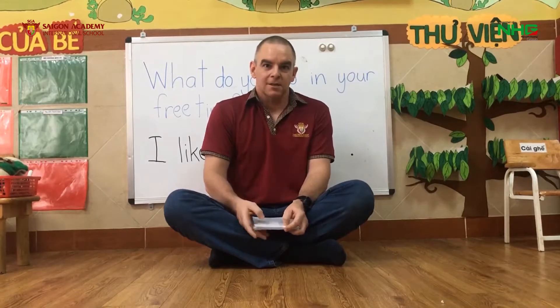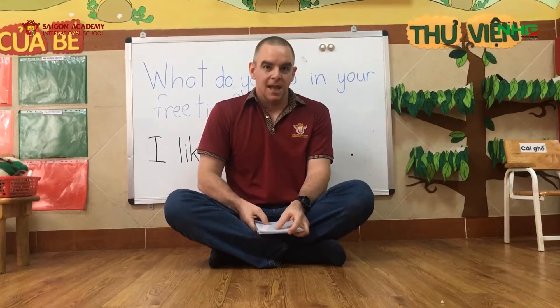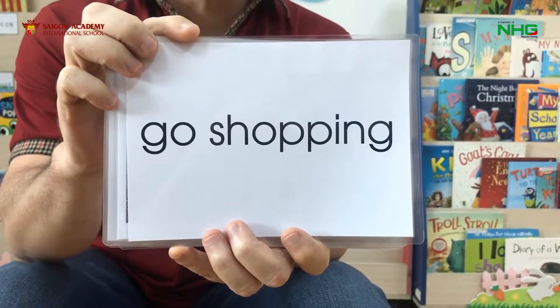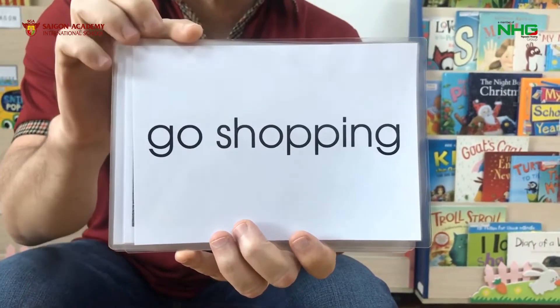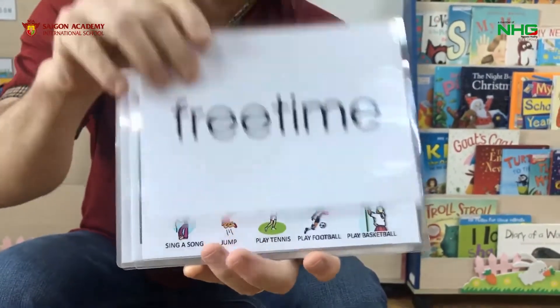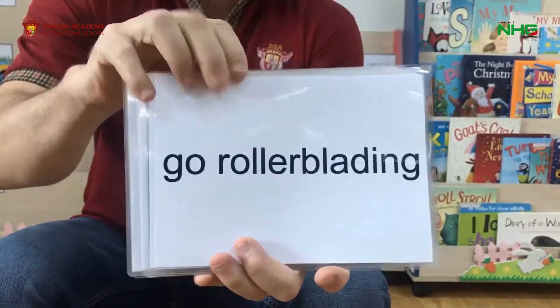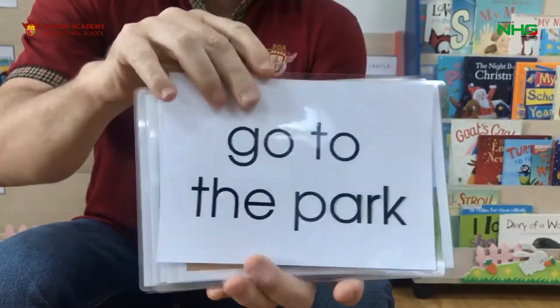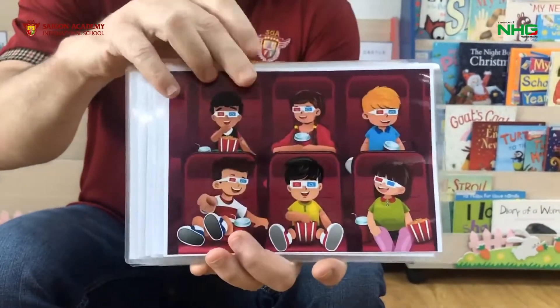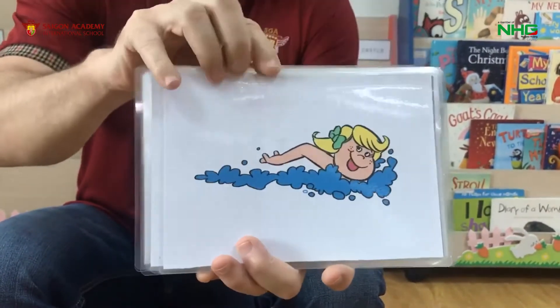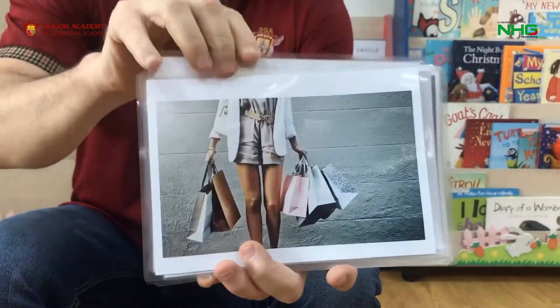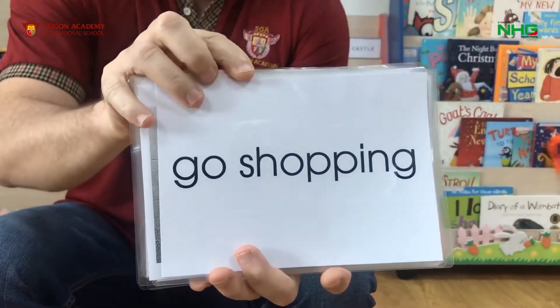We're going to learn some words. I have some activities here — listen and repeat after me. Here we go: free time, go rollerblading, go to the park, go to the movies, go hiking, go swimming, go shopping.